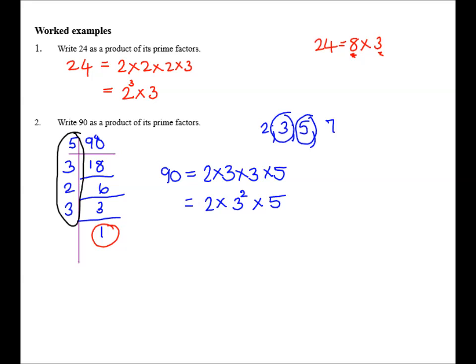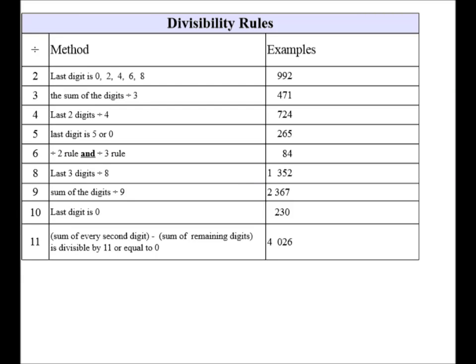Stop your video or pause it and please consider this. When we're prime factorizing, it is good to be able to run through the divisibility rules in your head. So a number is divisible by 2 if the last digit is a 0, 2, 4, 6 or 8.